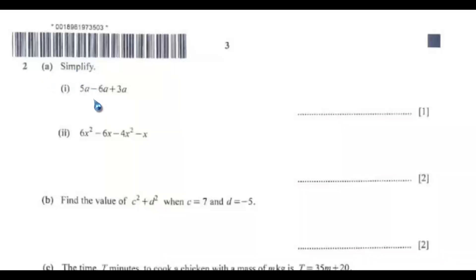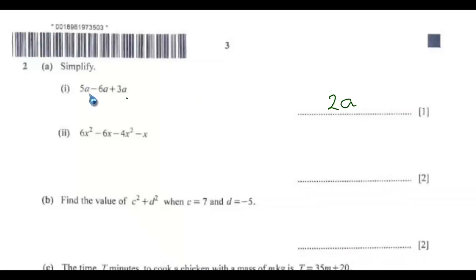Question 2: Simplify 5a minus 6a plus 3a. This is just a one-mark question. You can input this into your calculator: 5 minus 6 plus 3, which gives you 2, then add a to get 2a. Alternatively, 5a minus 6a gives minus 1a, and minus 1a plus 3a gives positive 2a.